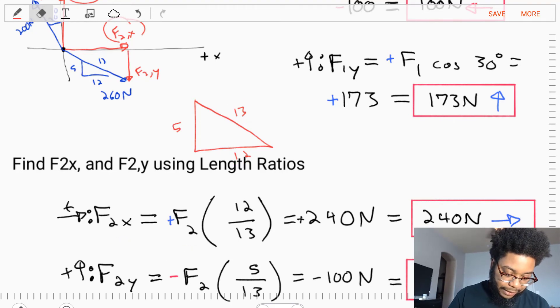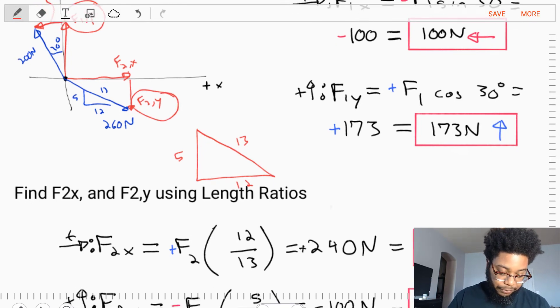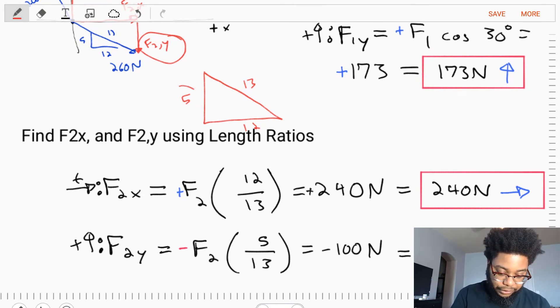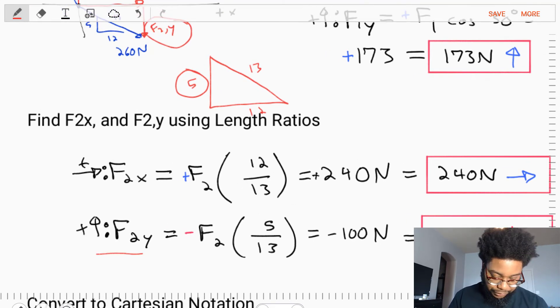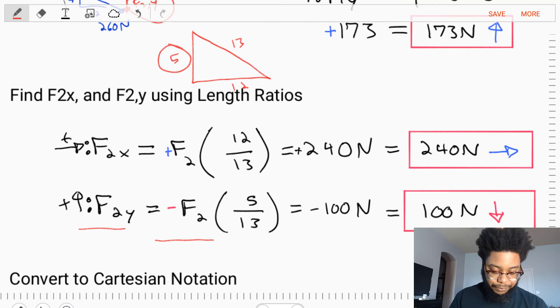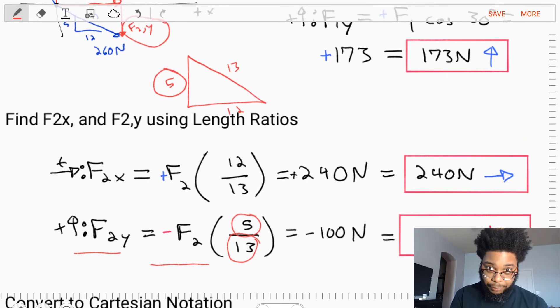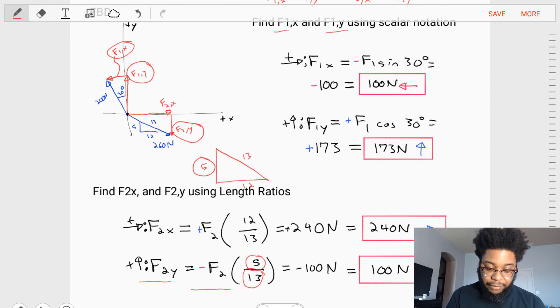Now let's repeat that same process, but let's do it for F2Y term. It's the Y term, we have our length ratios, we want to take the Y length, and then divide it by our run term. So we'll find that F2Y is equal to negative F2, because this arrow is directed downwards, so it's going to be in the negative Y direction, times the 5 divided by 13, so the Y term over the run. We put our numbers in, we get negative 100 newtons, and then that is our F2Y term. So now we've found the scalar notation value for the F1X, F1Y, F2X, F2Y terms.